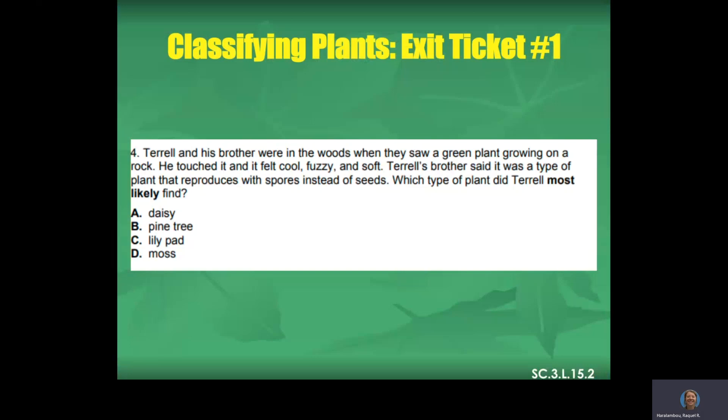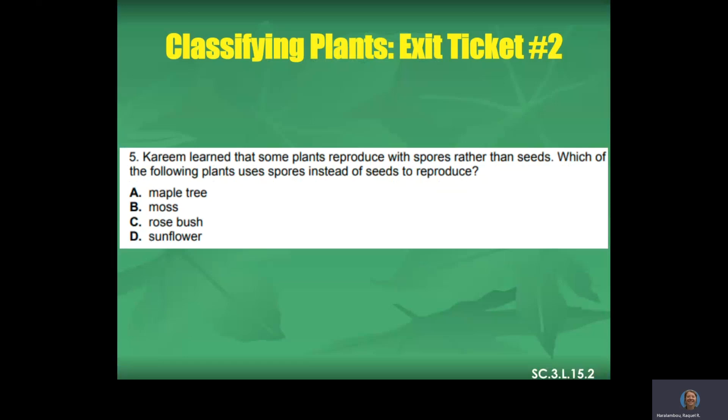So Terrell and his brother were in the woods when they saw a green plant growing on a rock. He touched it and it felt cool, fuzzy, and soft. Terrell's brother said it was a type of plant that reproduces with spores instead of seeds. So which type of plant did Terrell most likely find? We just talked about this. If it's wet, if it's cool, if it's growing in a dark spot and it uses spores, what kind of plant did he find? Yes, D. You should automatically be thinking moss. Very good. Karim learned that some plants reproduce with spores rather than seeds. Which of the following plants uses spores instead of seeds to reproduce? So uses spores instead of seeds. Ah, you caught it. It is B, moss again. Yes. So moss uses spores. All the other ones use seeds. The maple tree, the rosebush, and the sunflower.